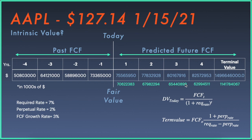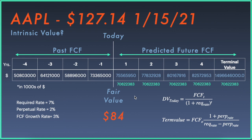Once we discount each value from years one through four to today's value, the resulting numbers are smaller than the corresponding future cash flows — because money in the future is worth less to us today. We perform the same discounting calculation for the terminal value and again find a smaller number. Summing all discounted future cash flows and the discounted terminal value, then dividing by the total number of shares, gives us Apple's fair value today: approximately $84. However, the current market price is about $127, meaning Apple shares appear overvalued.